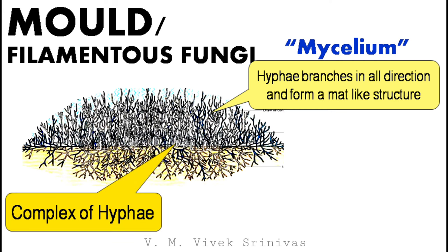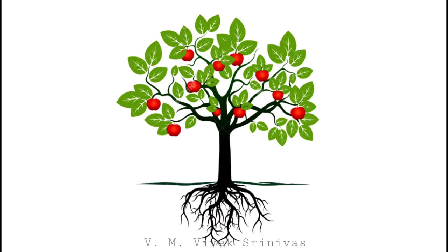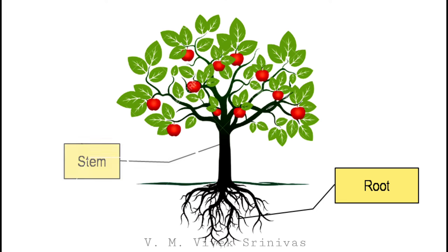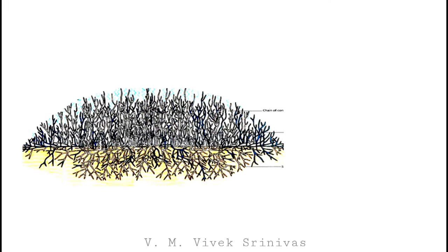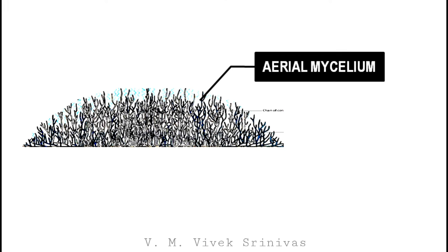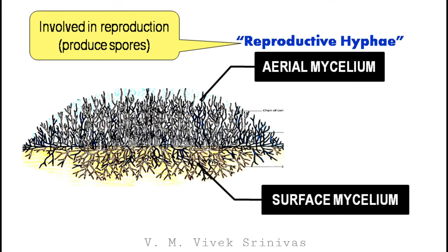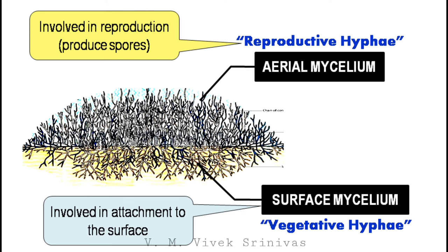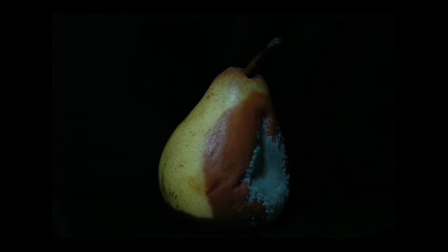Mycelium is the complex network of hyphae in mold. The term 'thallus' refers to the fungal body, which constitutes mycelium and spores. Molds resemble a microscopic version of plants and trees, with root-like structures for nutrient absorption and stem/branch-like structures giving rise to fruiting bodies (spores). The mycelium exposed above the surface is the aerial mycelium, also called reproductive hyphae, involved in reproduction and spore production. The mycelium embedded in the surface is the vegetative hyphae, involved in attachment and nutrient absorption.